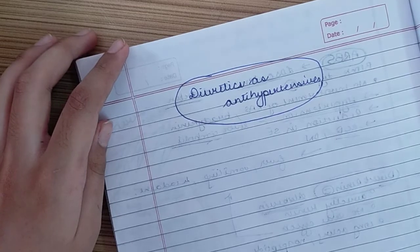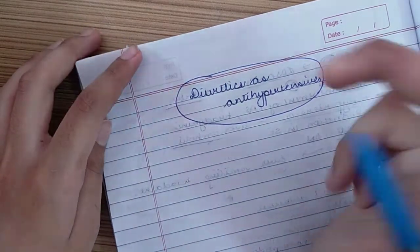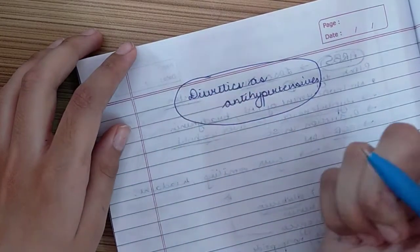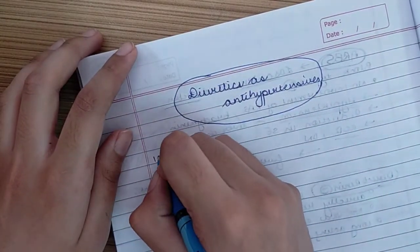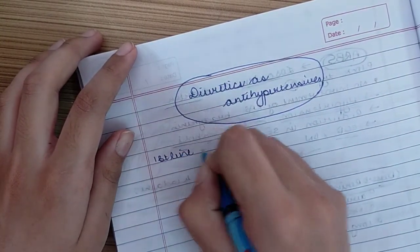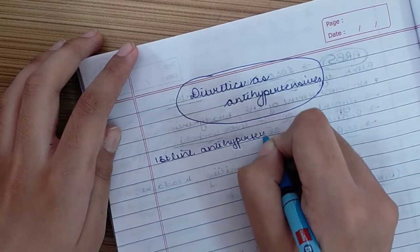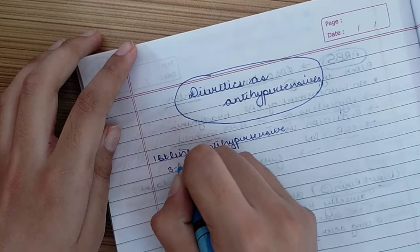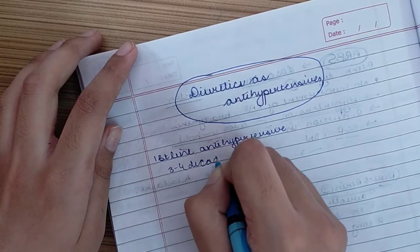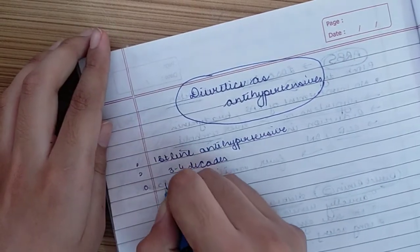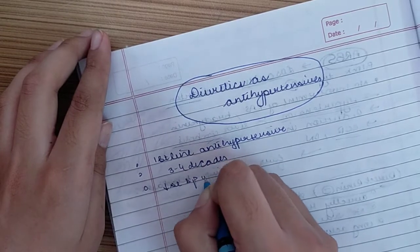We will discuss how diuretics can be used as antihypertensives. First of all, a general intro: the first-line antihypertensives include diuretics. They have been used around three to four decades. They do not decrease blood pressure in normal tension cases.